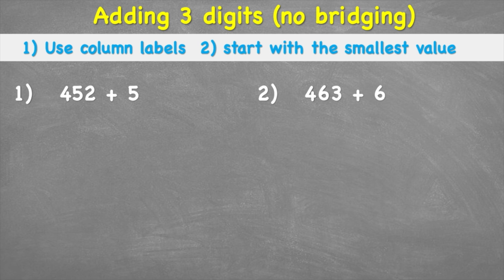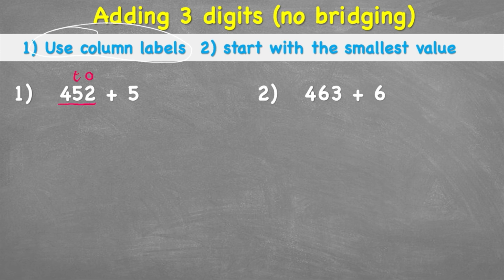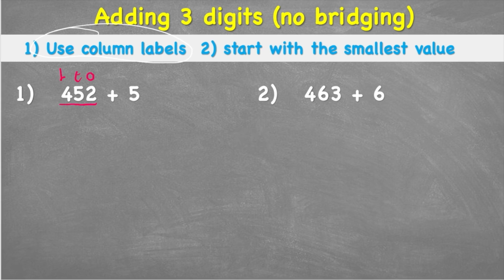Let's think about what step one means: use column labels. When we're putting these questions into columns, we need to make sure we put the numbers in the right column. We do that by understanding the value of each number. So first, let's look at 452. The 2 is in our ones column, the 5 is in our tens column, and the 4 is in our hundreds column.